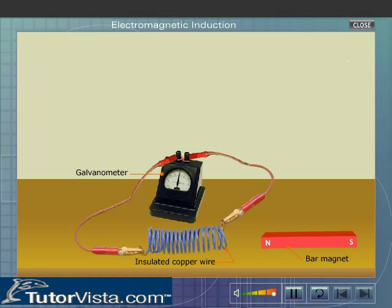Connect the ends of the coil of an insulated copper wire to a sensitive galvanometer. Observe that the galvanometer needle does not show any deflection. This indicates that no current is flowing through it.